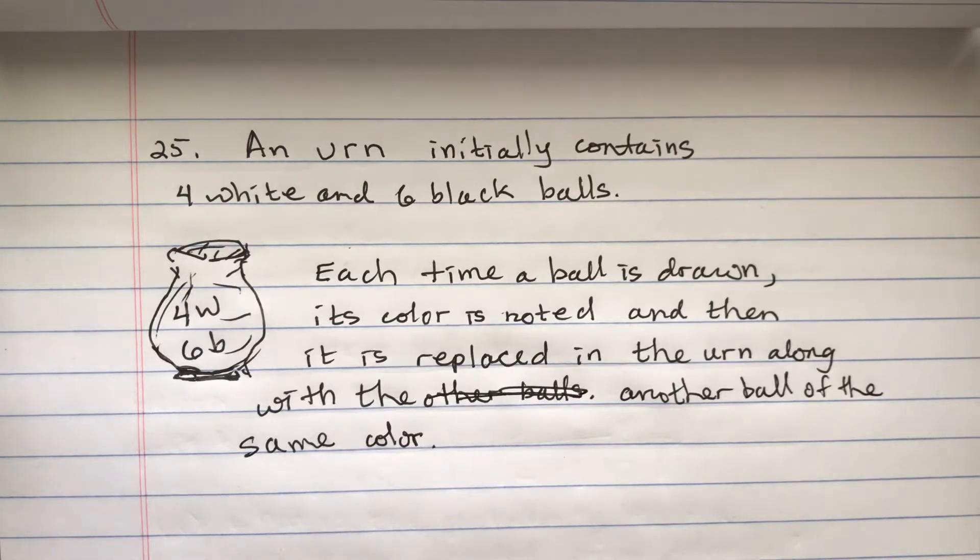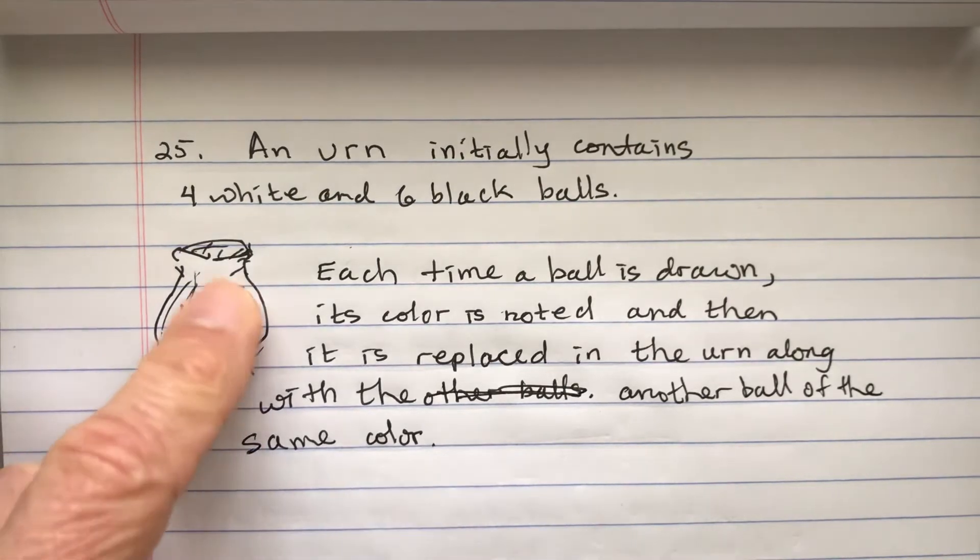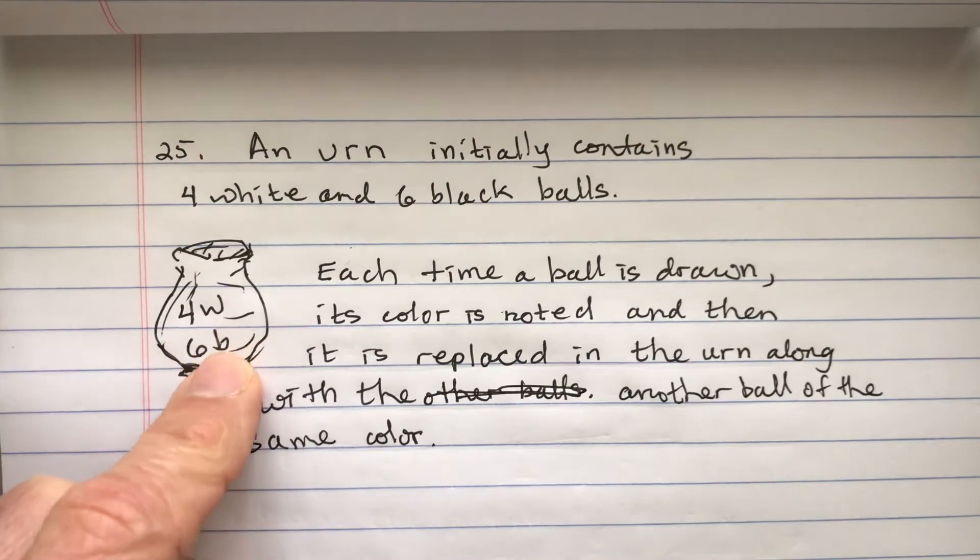This is problem number 25. An urn initially contains four white balls and six black balls. So here's a picture of my picture of an urn. Four white, six black balls.